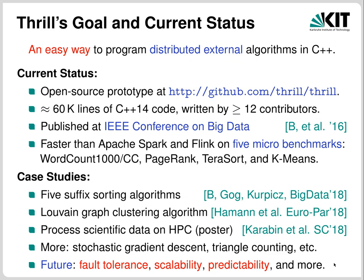For the future, the main challenges are introducing fault tolerance, improving scalability of the underlying catacomb layers to millions of machines, and adding predictability — where one wants to run an algorithm with a thousand items and then extrapolate to predict how long it will take on a million items. Another challenge is to productize Thrill by adding convenience and interfaces to other software.